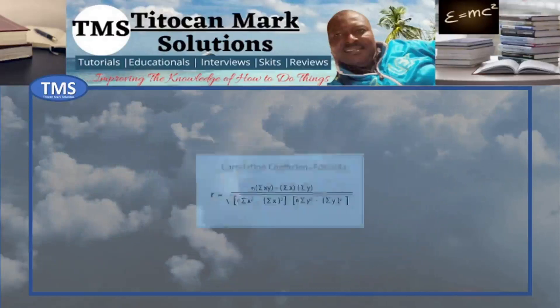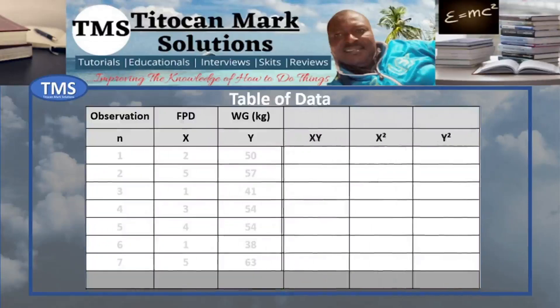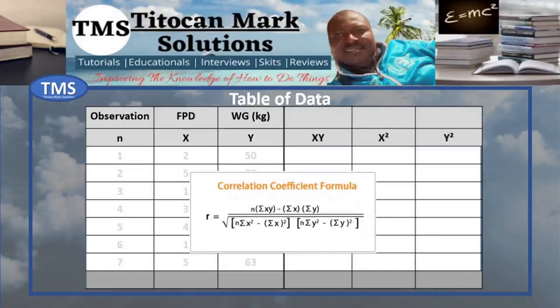However, for stability and in the interest of this tutorial, I will stick to this first formula whose calculation is more stable. This means you have to expand the columns of your data table to include X, Y, XY, X squared, and Y squared in order to satisfy the correlation formula. Then perform the necessary multiplications of the variables to fill the extra columns, and thereafter sum up each column to obtain the required sigma summations. Then substitute values of the summations into the formula as appropriate and solve for r, which is the Pearson's Correlation Coefficient.